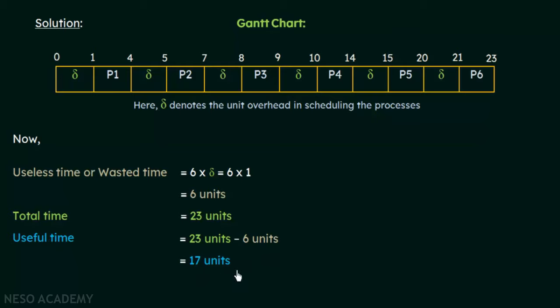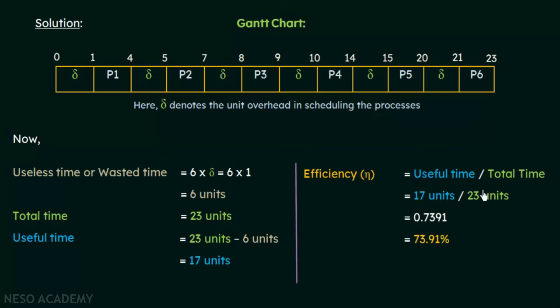Now we calculate the efficiency: useful time divided by total time. The useful time is 17 units and the total time is 23 units. 17 divided by 23 gives 0.7391, which is 73.91%. This is the efficiency of this FCFS algorithm for this particular set of processes with the given arrival times, burst times, and one unit of overhead in scheduling. That is how you calculate the efficiency of a scheduling algorithm depending on the type of processes and the delays given. Thank you for watching and see you in the next one.